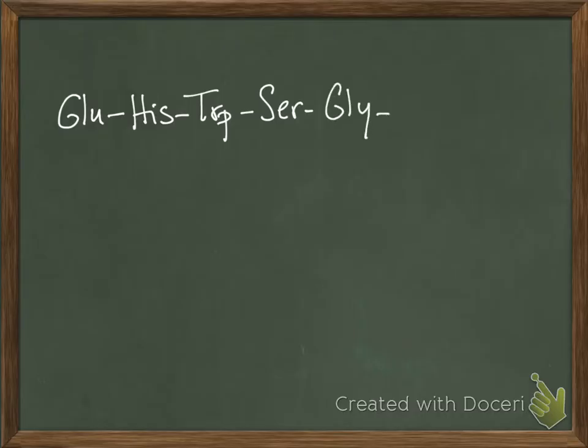So in this problem, your peptide is made up of Glu-His-Trp-Ser-Gly-Leu-Arg-Pro and Gly.